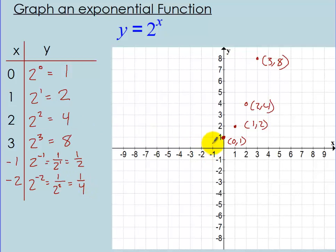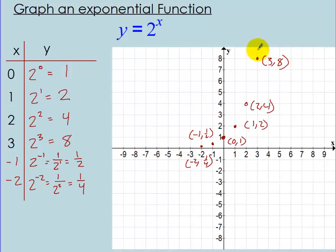I'll plot those two additional points: negative 1 and one-half is halfway between 0 and 1, and negative 2 and one-fourth is even closer to 0. You can see it gets closer and closer but never actually hits the x-axis. I'll sketch the curve through all the points, putting arrowheads to show it keeps going up forever and to the left forever. You'll want around 3 to 5 points to get a good curve.